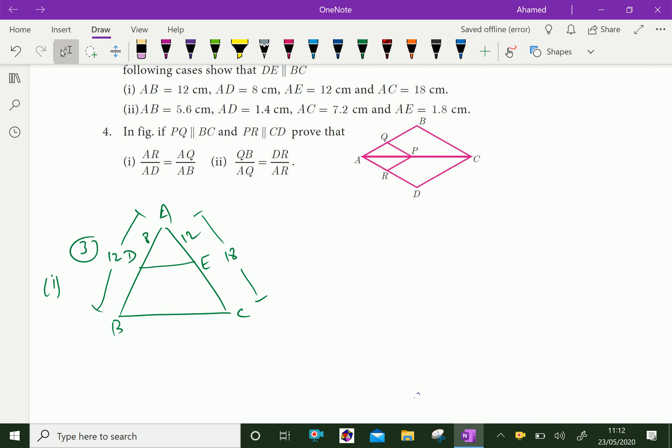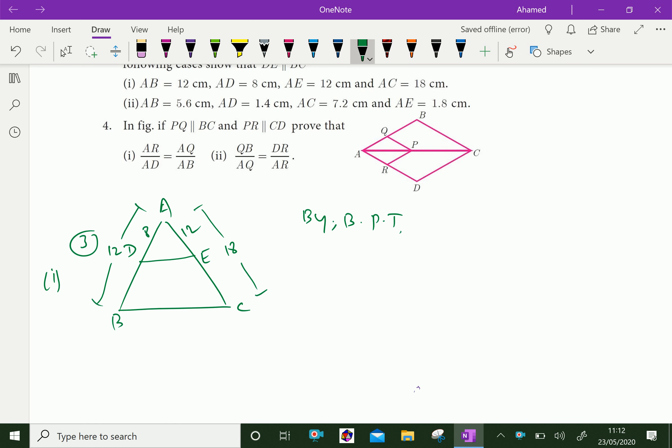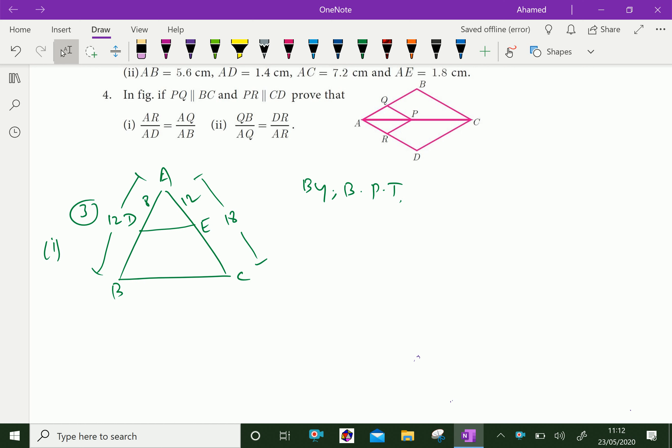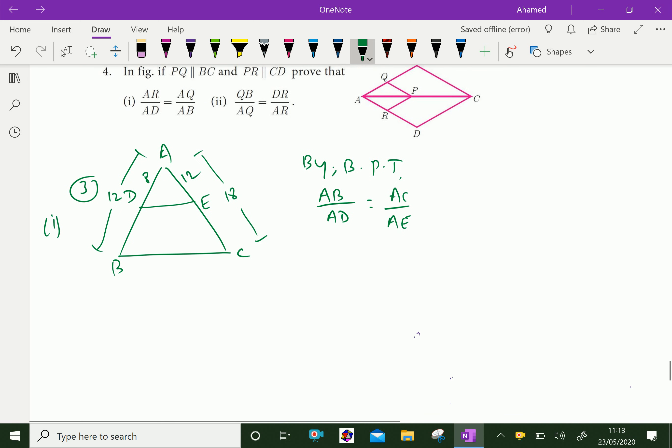By BPT, by basic proportional theorem, we can say AB over AD equal AC over AE. Now put the respective values. AB is 12, AD is 8. Here AC is 18 over AE is 12.